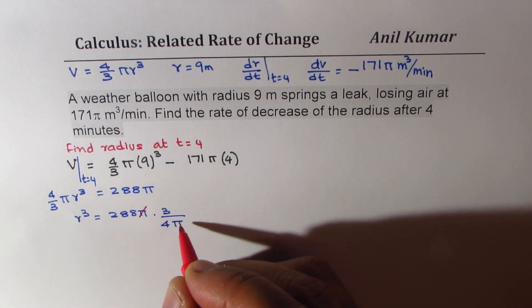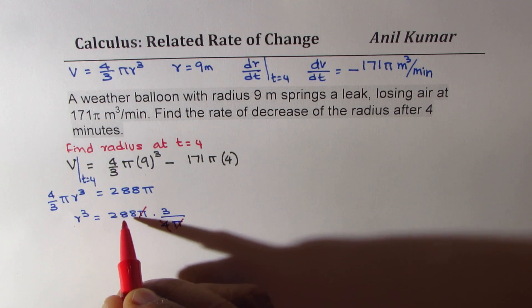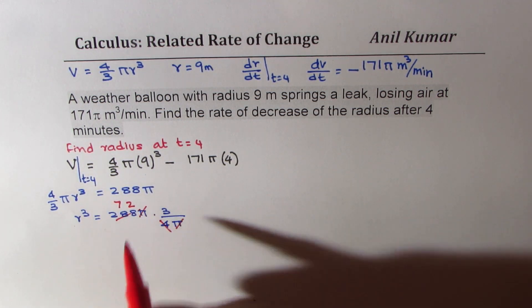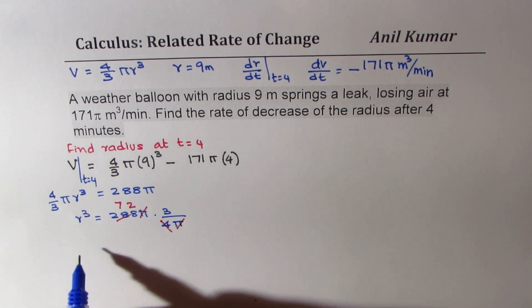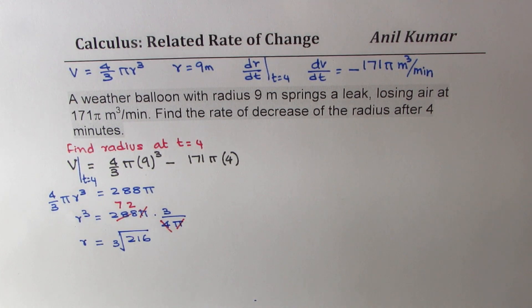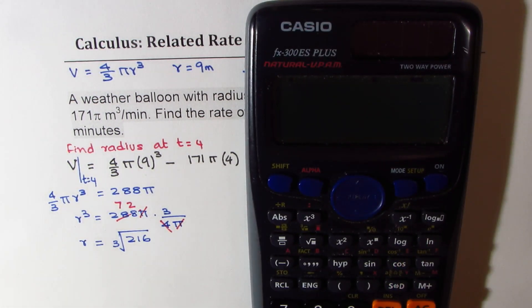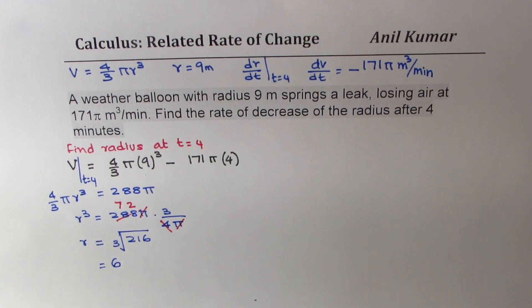Let's calculate this. Let's cancel. So we get r³ as 72 times 3, so r is equal to cube root of 3 times 72, which is 216. So let's find cube root of 216, which is finding cube root of 3 times 72, that is equal to 6.